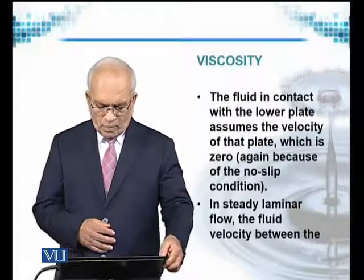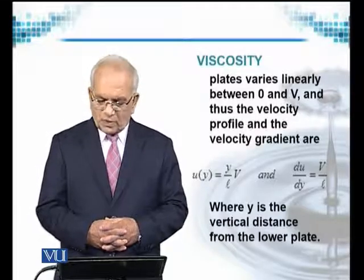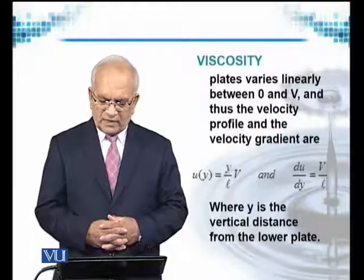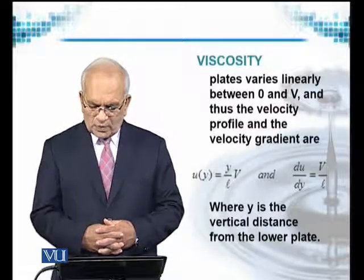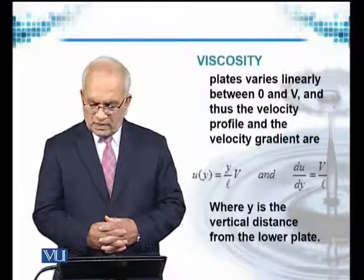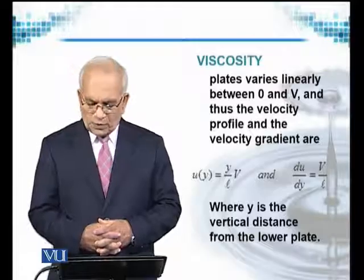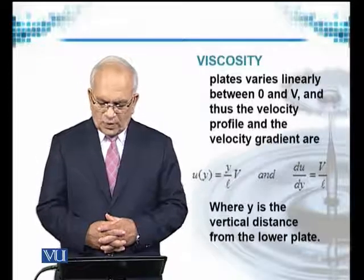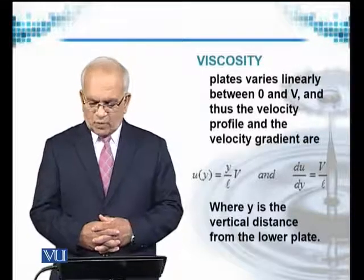In steady laminar flow, the fluid velocity between the plates varies linearly between zero and V. The velocity profile and velocity gradient are given as U equals (Y/L)·V, or for a small movement, dU/dY equals V/L, which describes the rate of change of U with respect to Y. Here Y is the vertical distance measured from the lower plate.